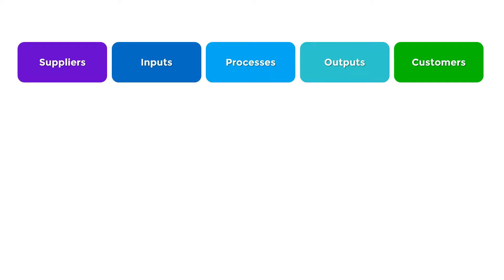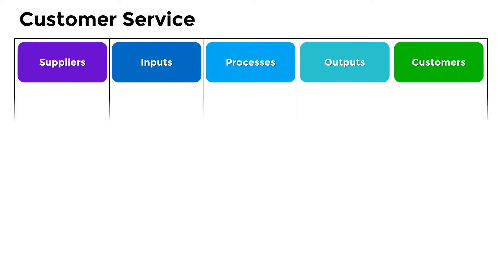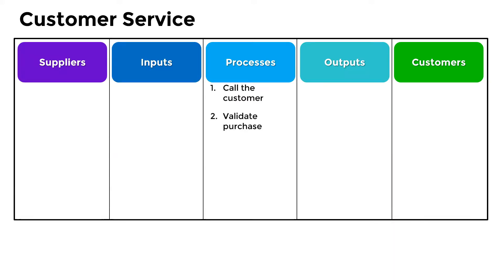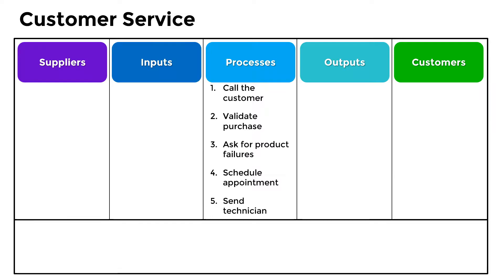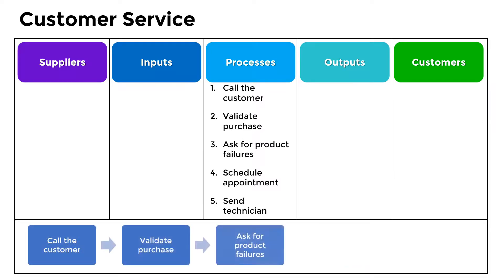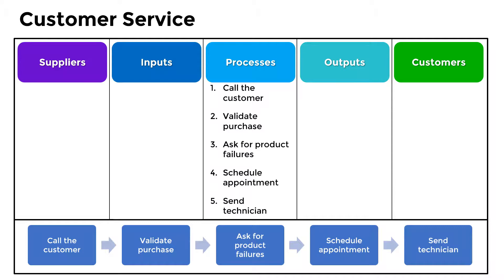The first thing is to identify the process we will represent — that is, the name of the process. Then we'll describe the four or five key steps of the process. It is worth using a sample flowchart that we can place apart for space reasons.